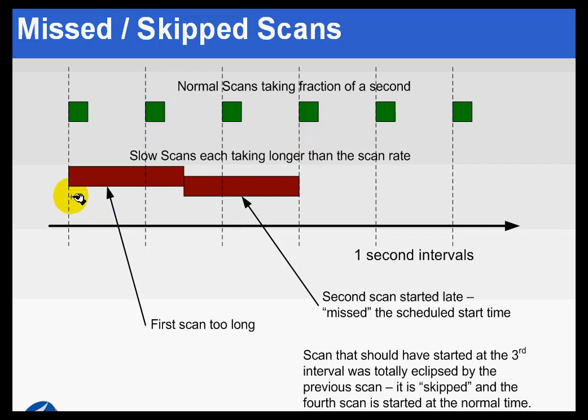But what if we've got a different interface that's got a much, much greater number of tags? Or, for example, just within the same interface, maybe you've got a scan class that has many more tags associated with it, and if it's taking one and a half seconds to scan through these tags, then you're really not getting one-second scanning.